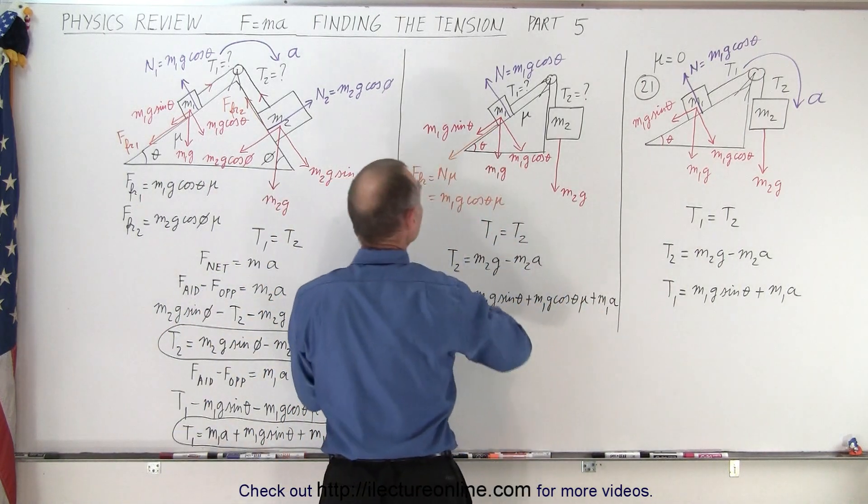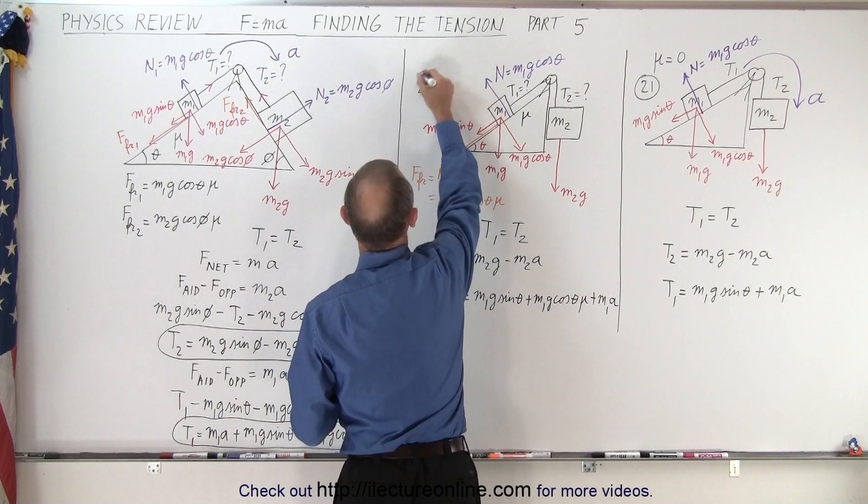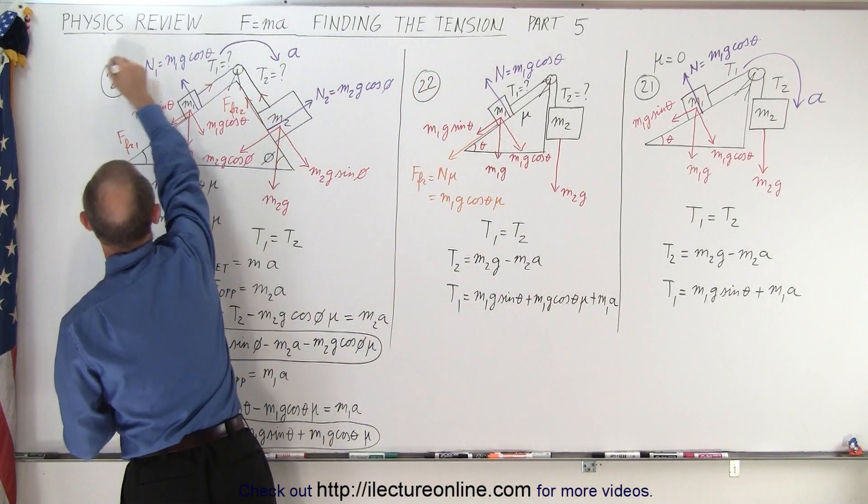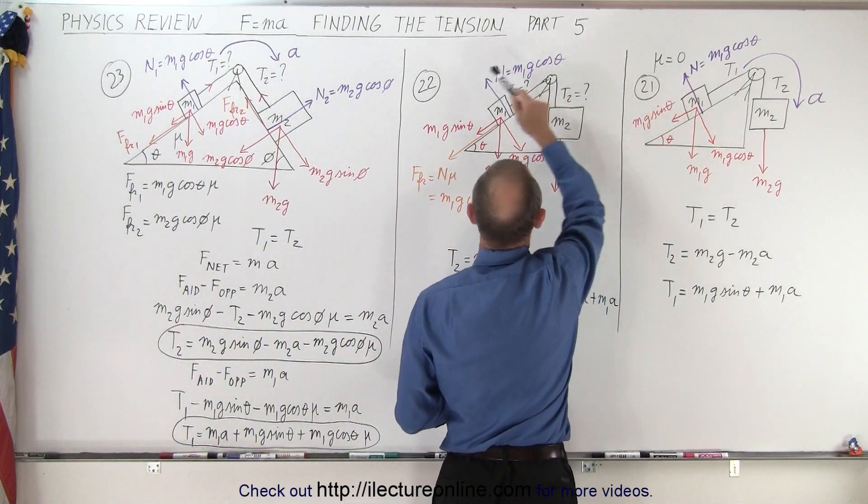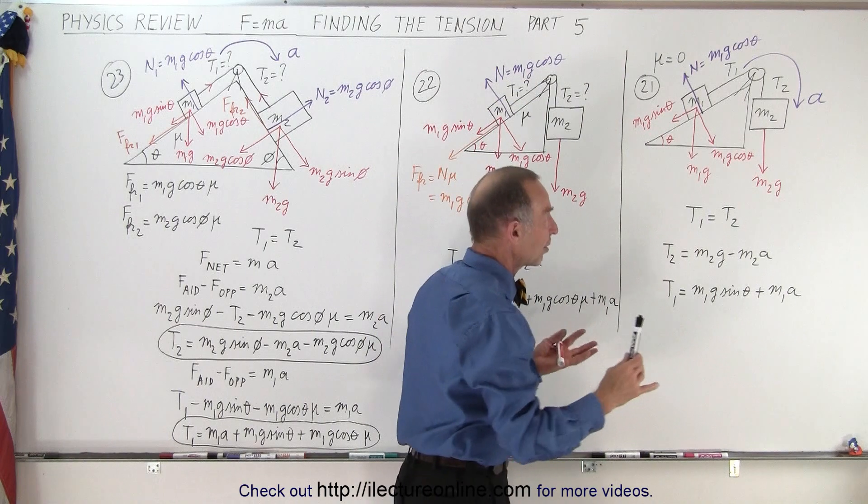This is example 21. I guess I didn't number them all. This is 22, this is example 23. In 21 here notice that there's no friction, but on 22 there is friction. So what is the difference?